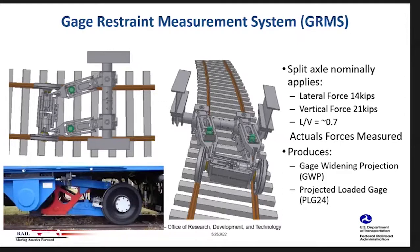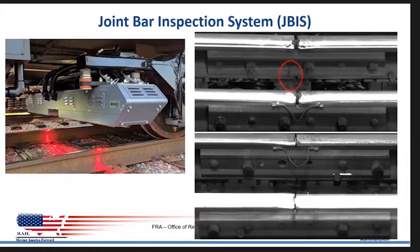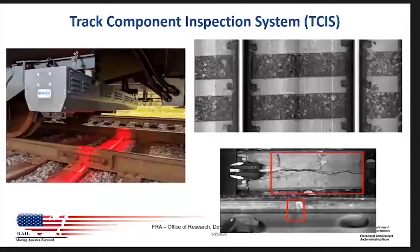This system allows us to obtain a performance-based assessment of tie and fastening systems. The other system I'm going to talk about is the joint bar inspection system — this is a machine vision based system that allows us to identify cracks at joints, missing bolts, loose and missing bolts, strip joints, and things like that.